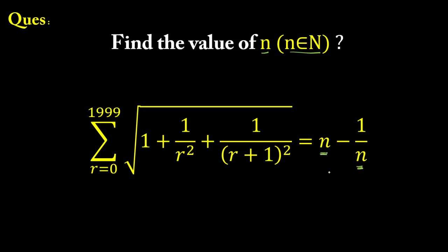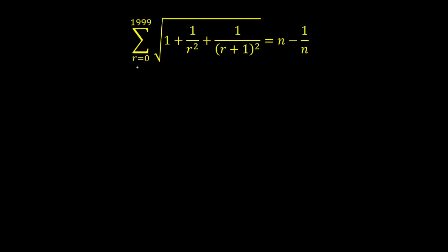If you have not checked my previous videos on telescopic series, you can press the i button to check. Now let's start with the question. I'll tell you a general way to approach this kind of telescopic series question. First, you write T(n), the nth term of the series. The general term is given in r, so we replace r by n to get the nth term: root over 1 plus 1 upon n squared plus 1 upon (n+1) squared.